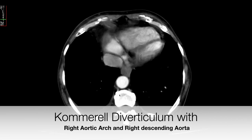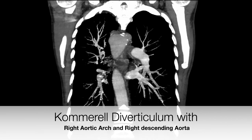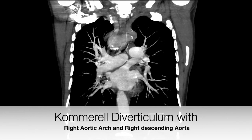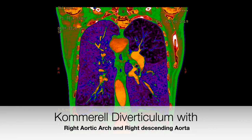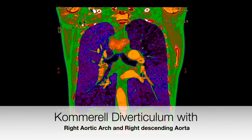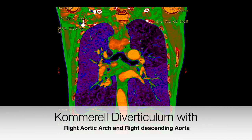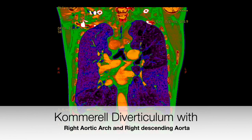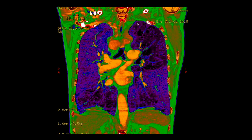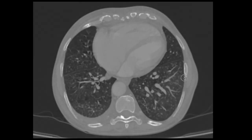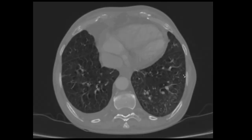There is a right-sided descending aorta — normally it is on the left side. There is an anatomical variant where you can appreciate a kinking, and the left subclavian artery is kinked. In the 2D VR you can appreciate an apparent left outpouching. This is called Kommerell's diverticulum. This type is the second most common.